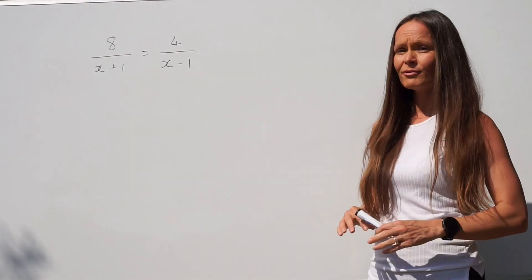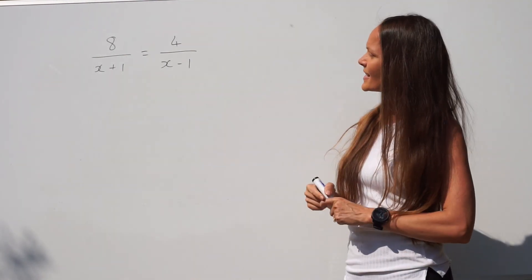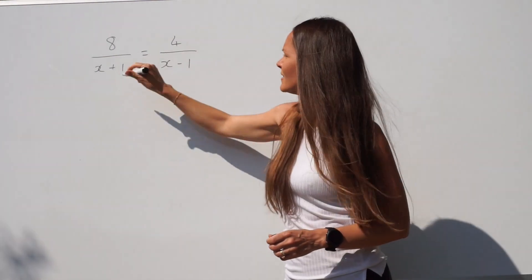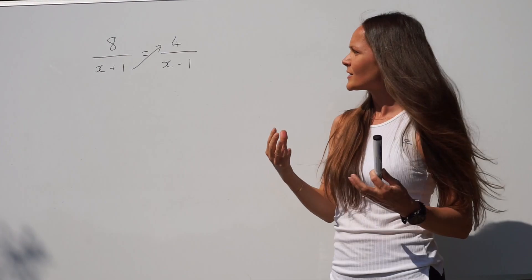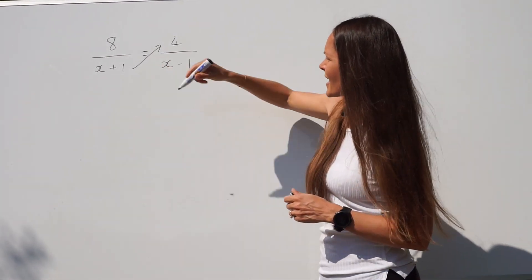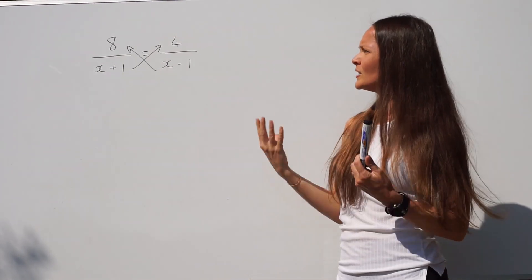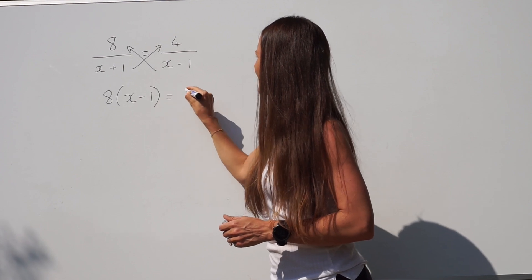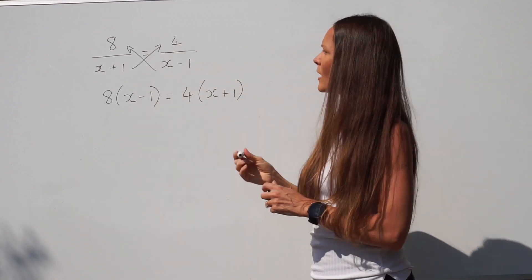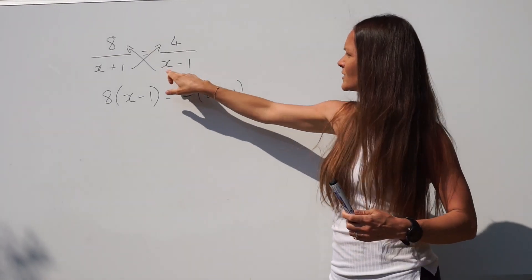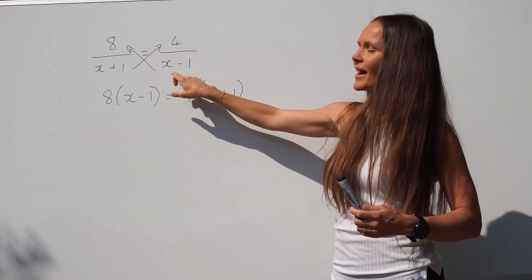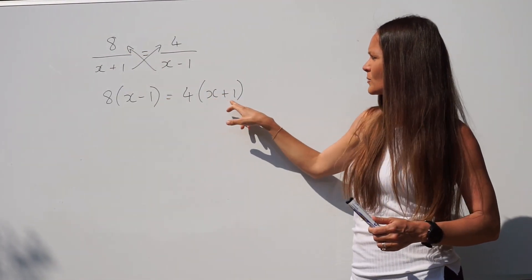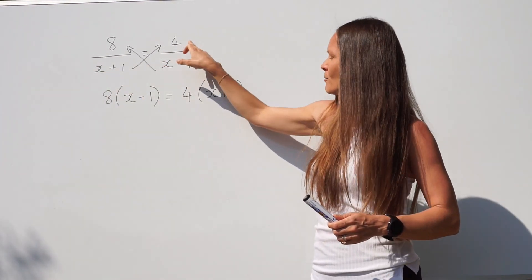Cross multiplying is really easy. All you have to do is multiply the right hand side of the equation by this denominator x plus 1, and multiply the left hand side of the equation by the other denominator x minus 1. When you do that you then have 8 brackets x minus 1 equals 4 brackets x plus 1. I've put them in brackets because there's more than one term in this expression and I have to remember to multiply all of it by 8. Likewise with the other side, I've put x plus 1 in brackets because I have to multiply all of it by 4.